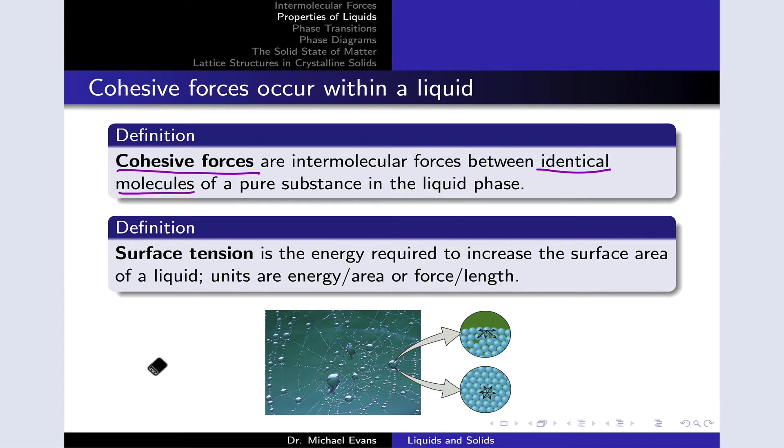Surface tension you can think of as an energy. It's the energy required to increase the surface area of a liquid by some units, so the units are energy per area. This is equivalent to a force per length, the force required to lengthen the surface by some unit length. Surface tension is derived from cohesive forces. The stronger the cohesive forces, the greater the surface tension.